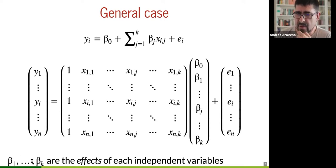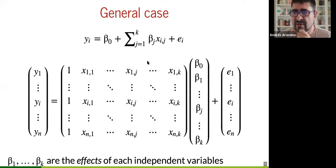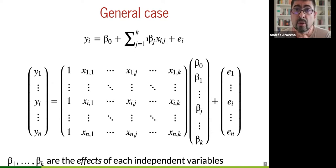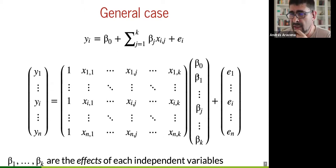Beta_1 through beta_K are going to be the effects — I call them the slope, or sometimes effects of each one of the conditions of the independent variables on the outcome. That is why we care: we want to know the effects. Our data will be the results of our experiment — these are the conditions we controlled or measured — but what we really want to know are the effects. What is the baseline condition and what are the effects?